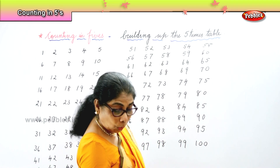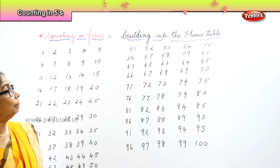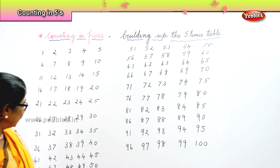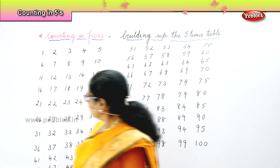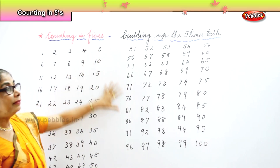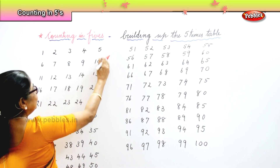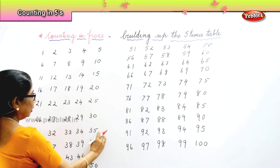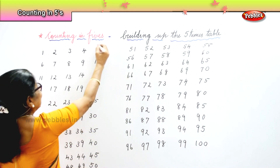Now, what we have done here is building up the five times table. You have all the numbers from one to one hundred. Now look at one, two, three, four, five — we just made a pattern. Let us box in. Now look: five, ten, fifteen, twenty, twenty-five, thirty, thirty-five, forty, forty-five, fifty. You got the five times table!